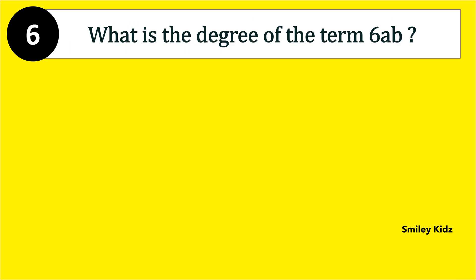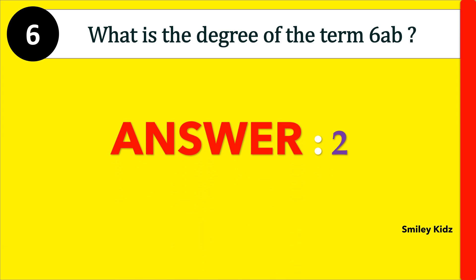Moving to question number 6. What is the degree of the term 6ab? The right answer is 2. The degree of the term refers to the sum of all the powers of the variables in the term. 6ab is a term with a to the power 1 and b to the power 1. Sum of the powers is equal to 1 plus 1, that is equal to 2. So, the degree of 6ab is 2.